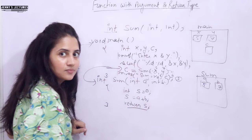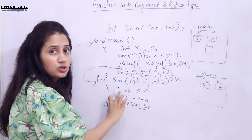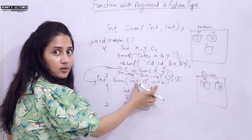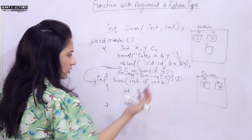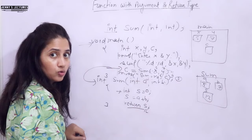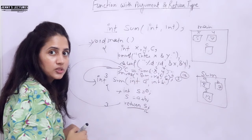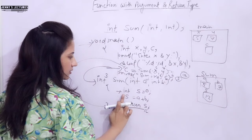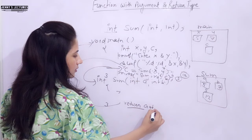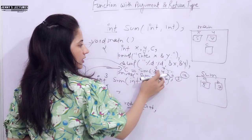We already have the data on which we want to perform addition, which is why we do not need to declare a local variable and ask the user again. The sum function accepted those numbers as arguments from the calling function. Variable s gets the value of a plus b, which is 12. Return s sends 12 back to the caller. Control returns to main where the value 12 is stored in c, and then c is printed — so 12 appears on the output screen. Alternatively, you can simplify this by writing return a plus b directly, without needing the variable s at all.